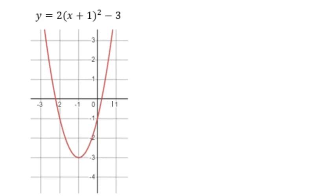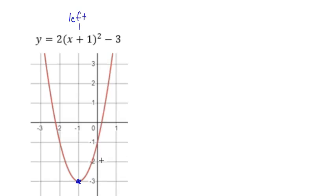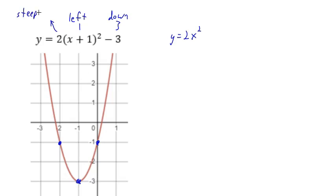Here's another equation written in vertex form, and here's its graph. The vertex is left 1 and down 3 from the origin. Moving from the vertex right 1 unit, notice we go up 2 in both directions. That's similar to the parent graph of y equals 2x squared, where the first move was over 1, up 2. The 2 in the equation made it steeper compared to the last one.